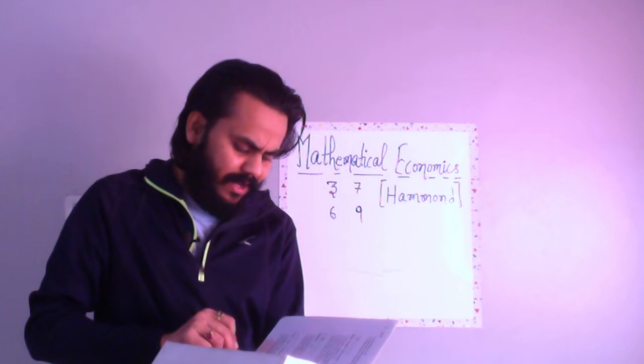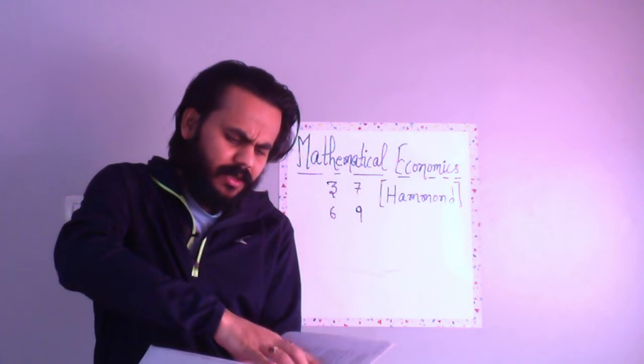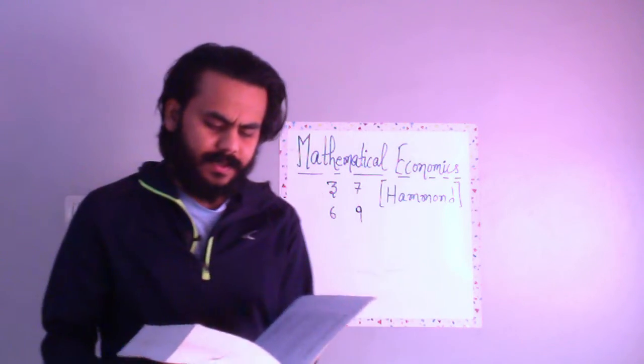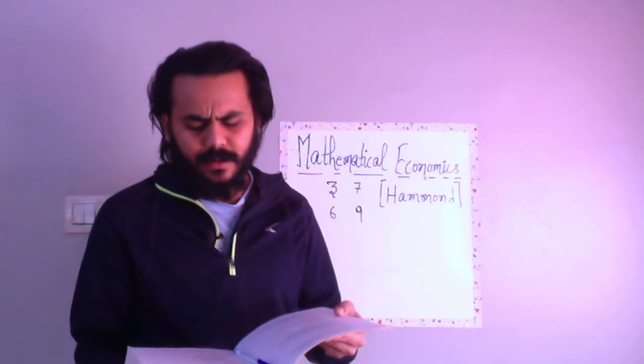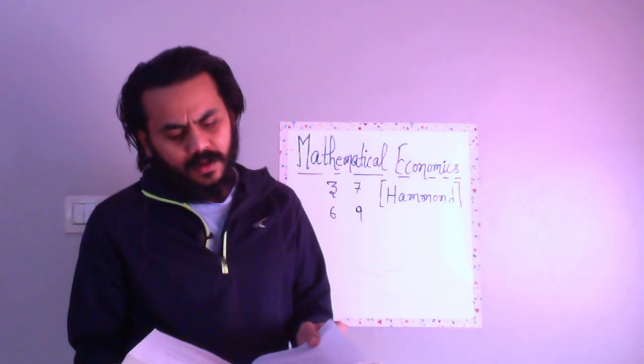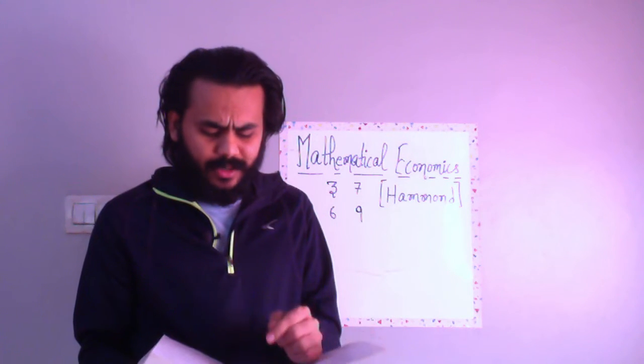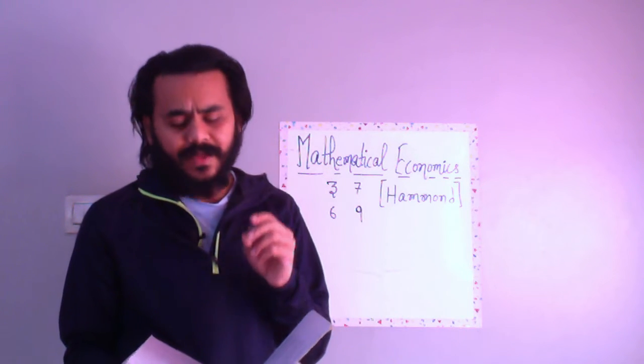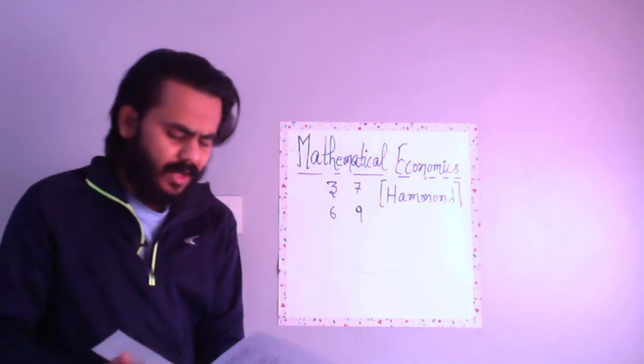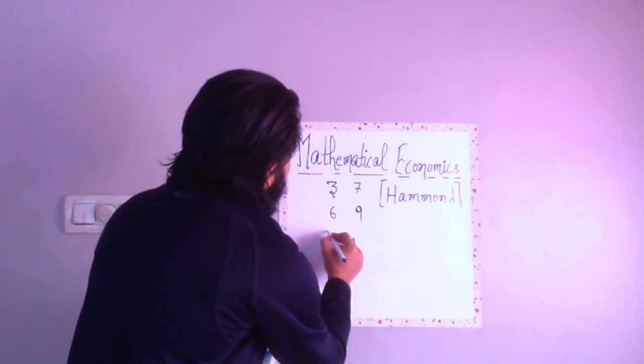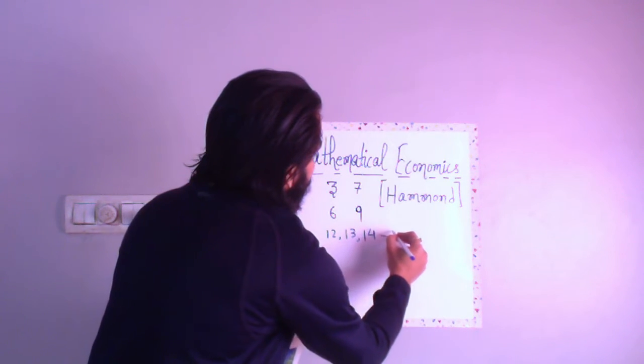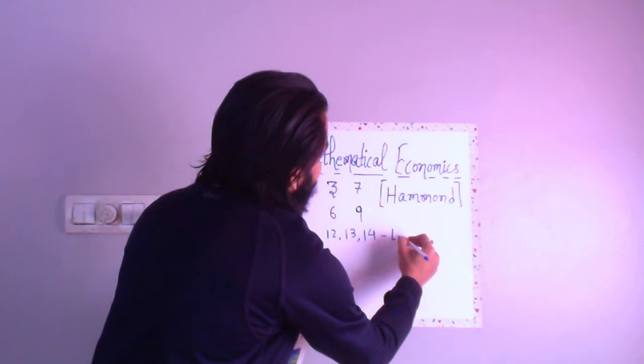Moving on, chapter twelve has linear algebra, vectors and matrices. In chapter thirteen you have determinants and matrix inversion. Chapter fourteen has further topics in linear algebra. Chapters 12, 13, and 14 are from linear algebra and this is a bit more advanced than your J syllabus.